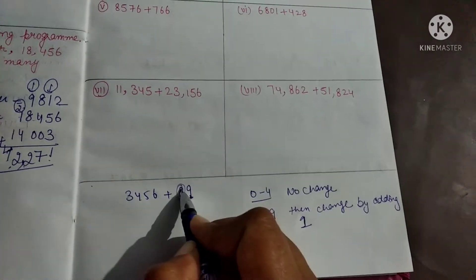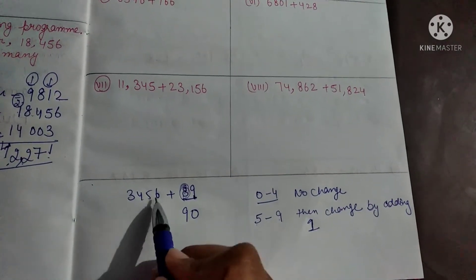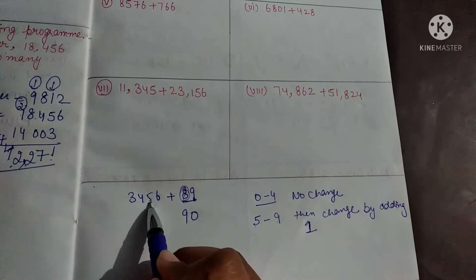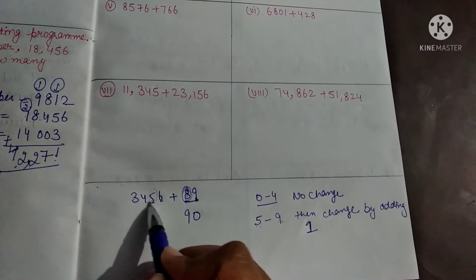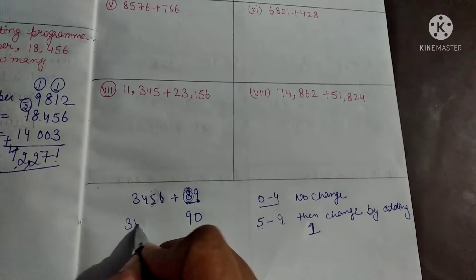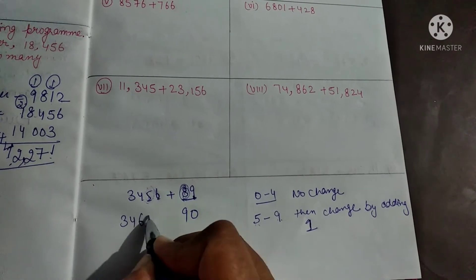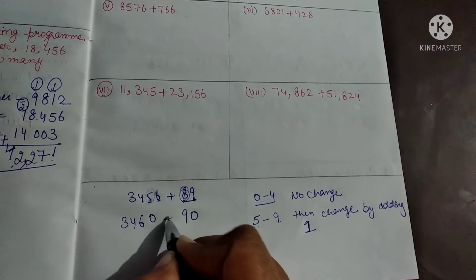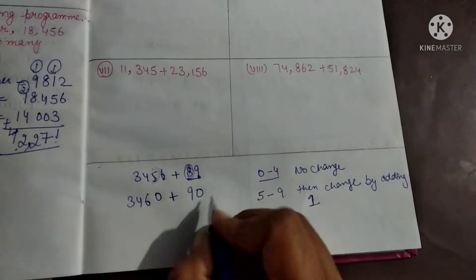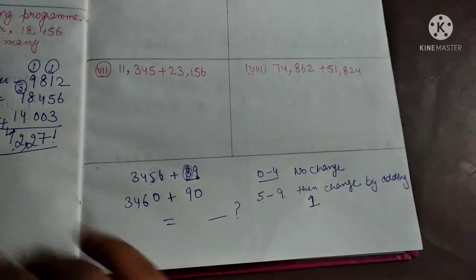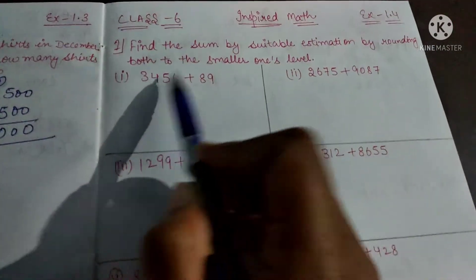It means it becomes 90. Now for the tens place — 5 — we have to observe: it is between 5 to 9, so we add 1 in this place. 5 plus 1 makes 6, and the ones become 0. Now add both and our answer comes out. Now start doing the exercise: question number 1 — 89 and 3456.